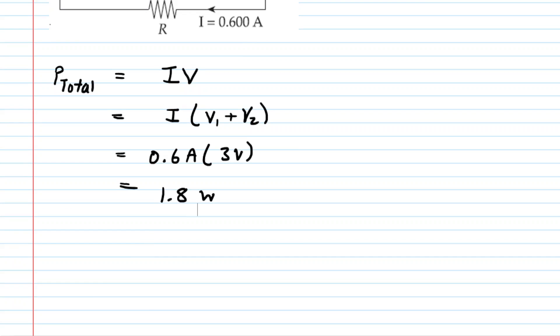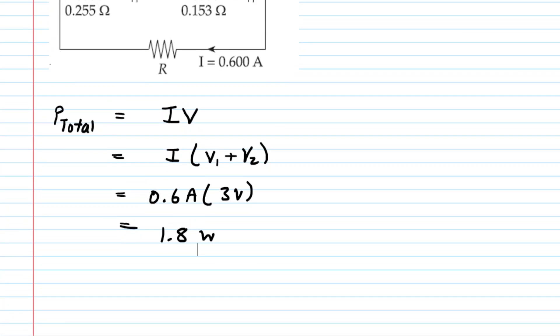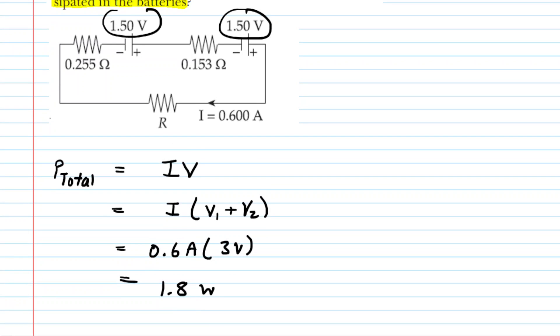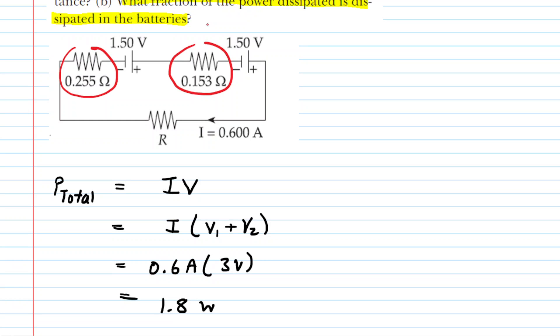Now, that's great, but we have to figure out, of that 1.8 watts, how much of it was dissipated by the internal resistance of the batteries. Notice again, if you look at the pictures, each battery has its own internal resistance, and it is the internal resistance that is dissipating some of the 1.8 watts worth of power. So we need to calculate those as well.